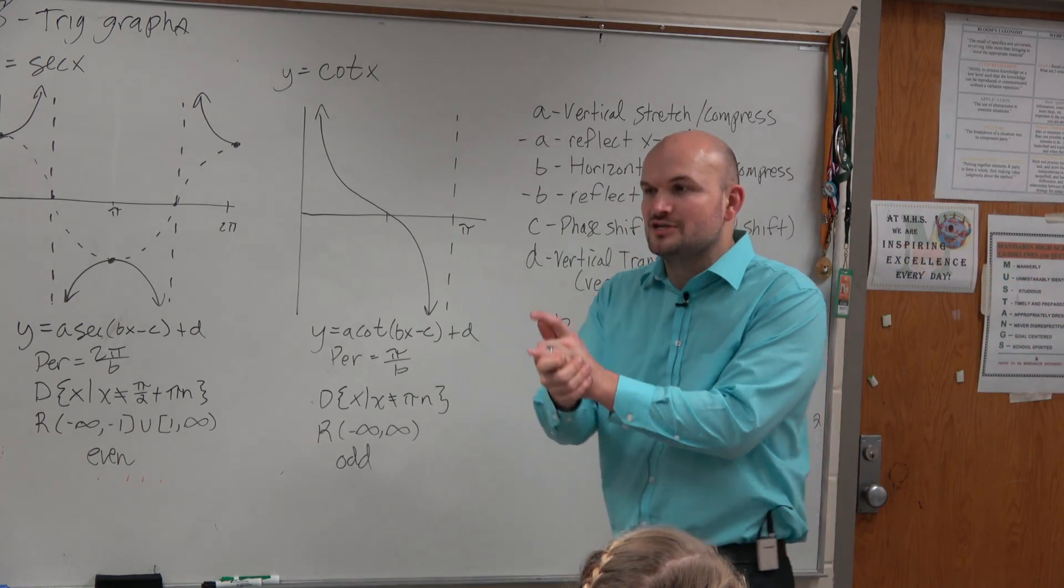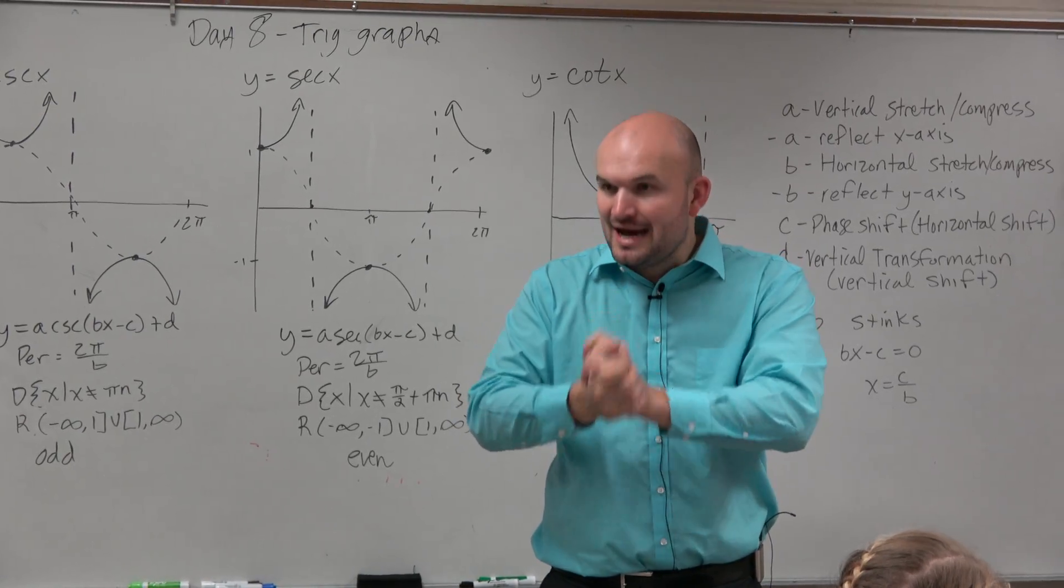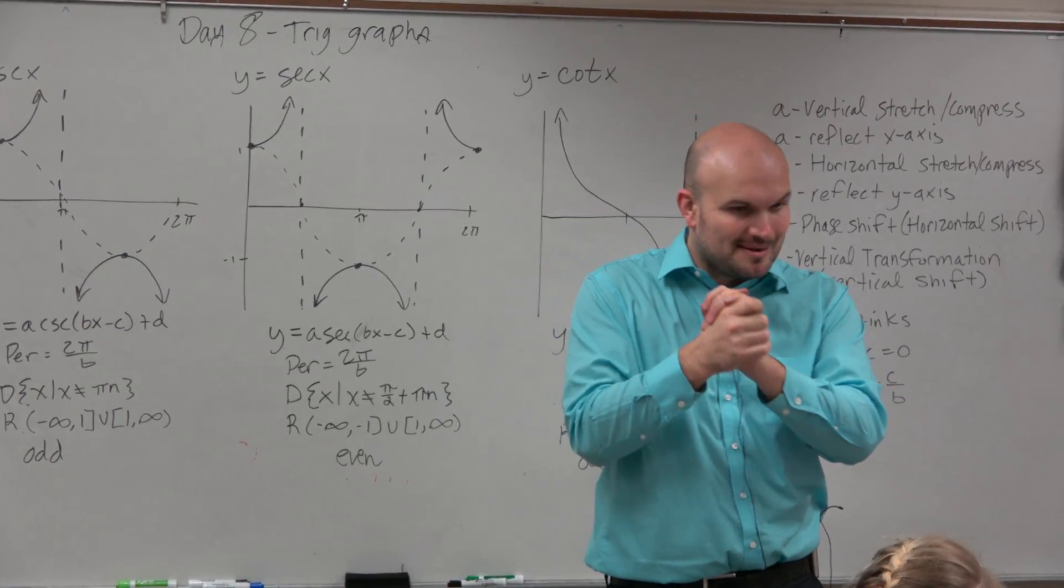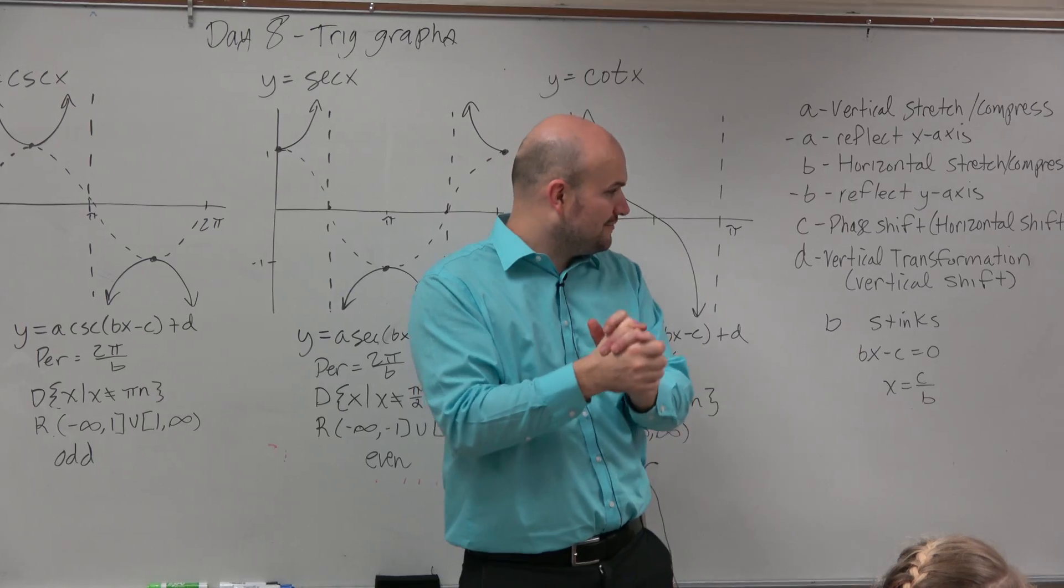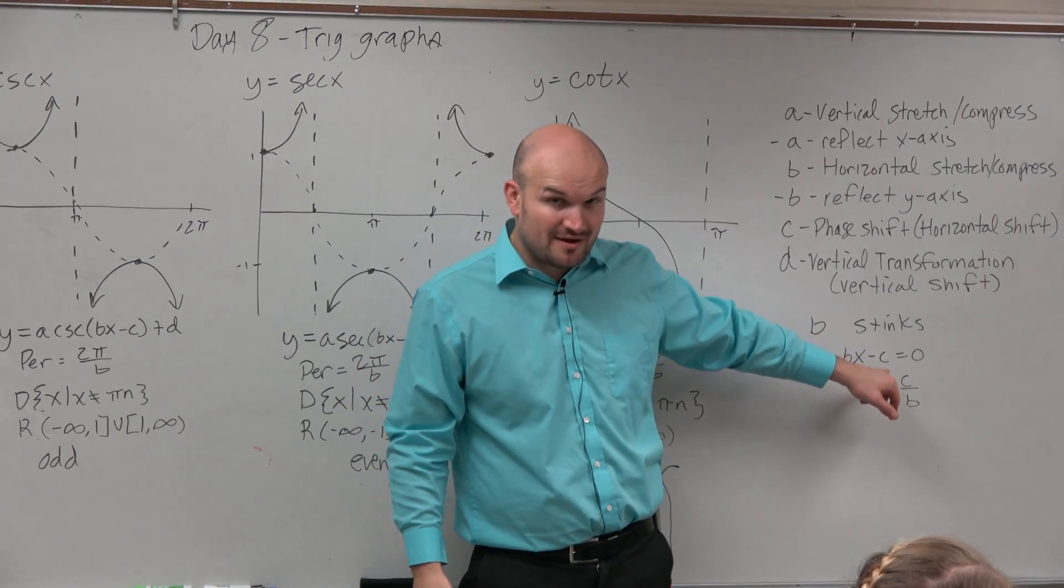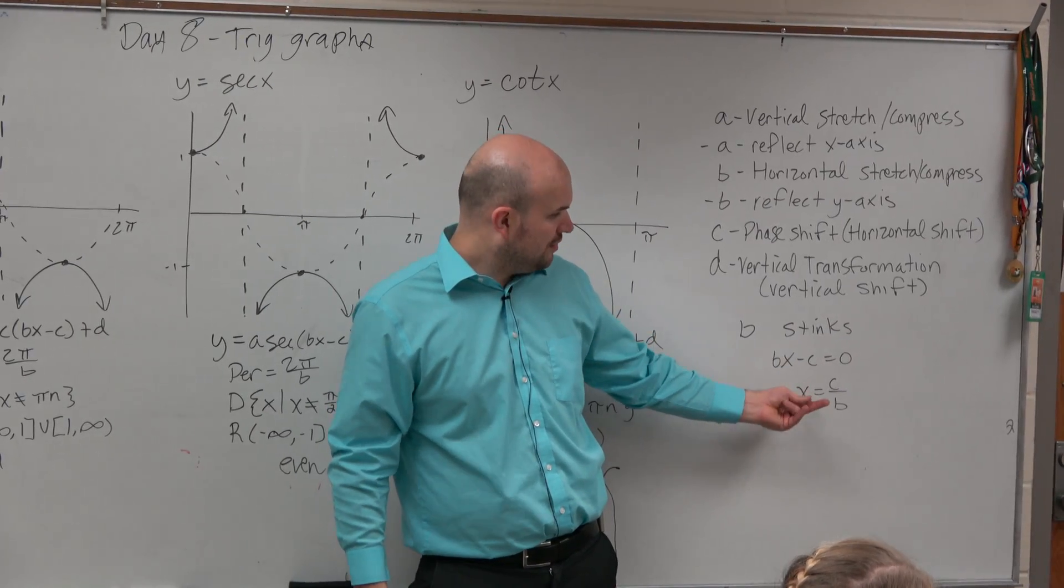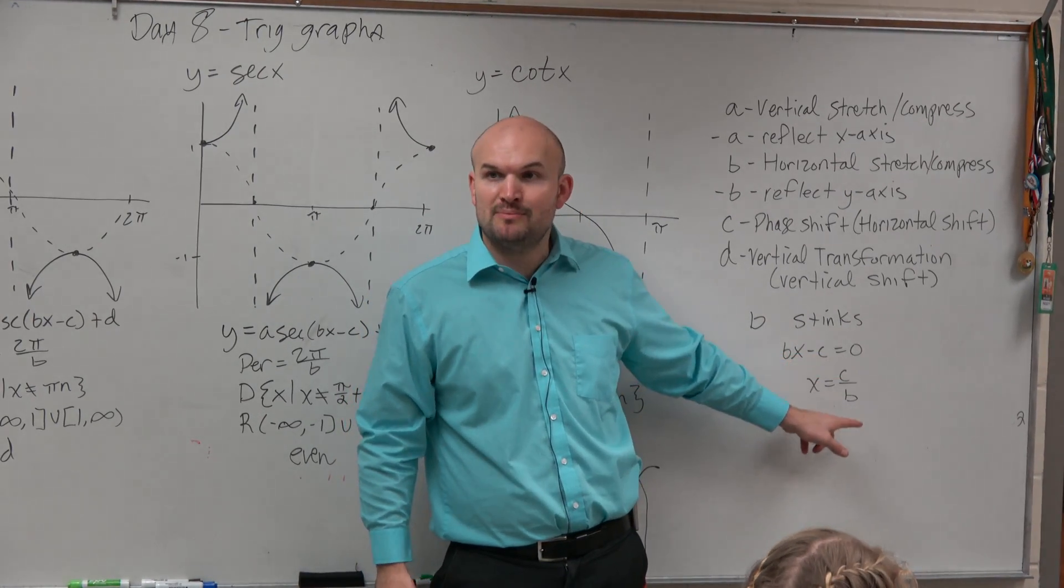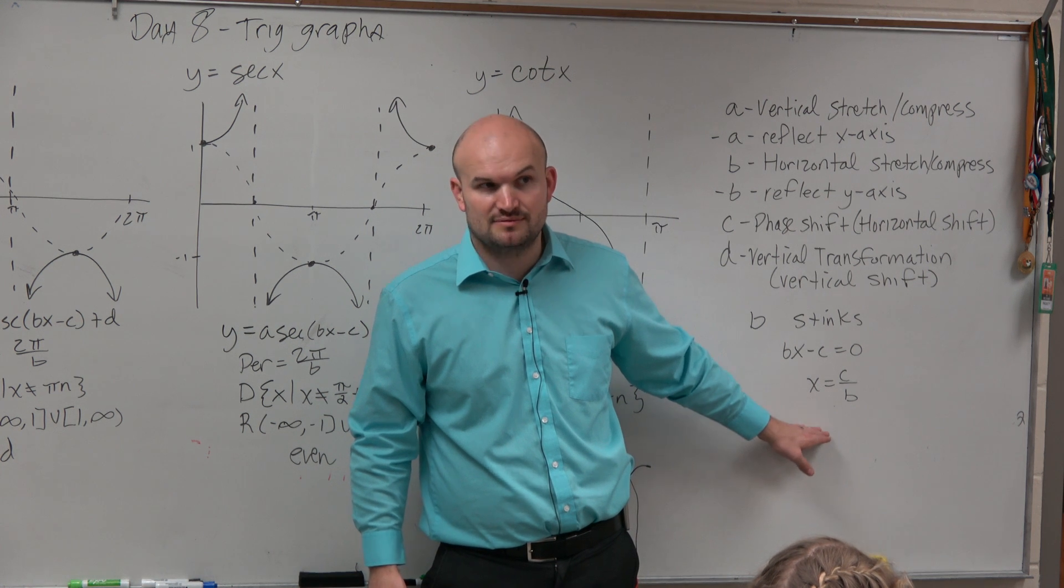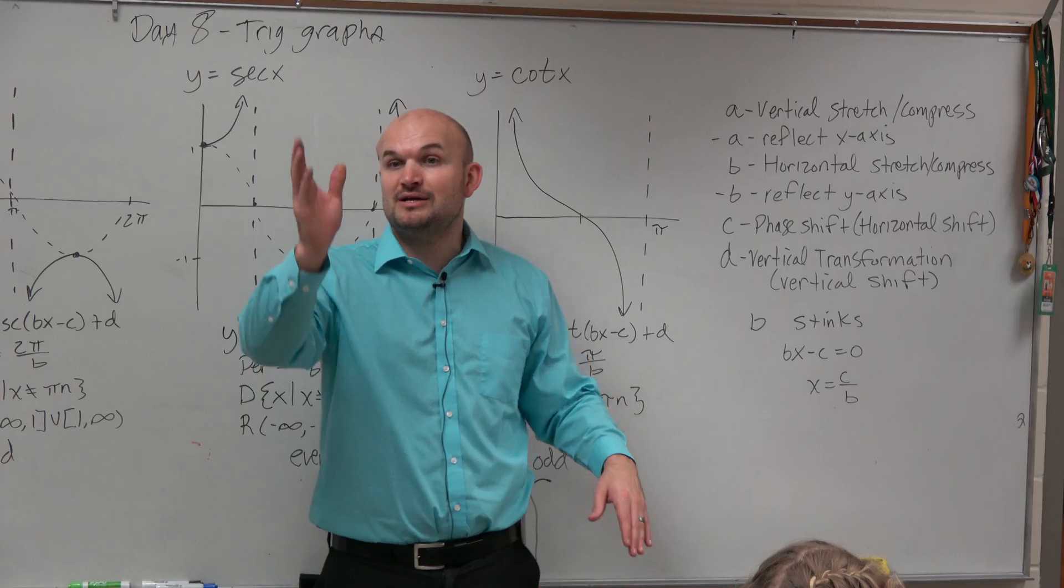And then last but not least, ladies and gentlemen, is b stinks. Remember, we've got to remember this. And this is the last time b stinks is going to come up, at least for instruction. But we've got to remember, when we have a b and we have a c, we have to make sure we set it equal to 0 to solve, or to say x equals c divided by b, because that affects the shift. OK, so that is your summary of our six trigonometric graphs.